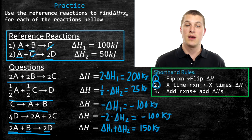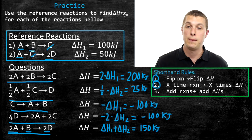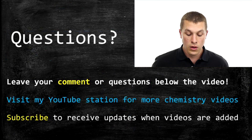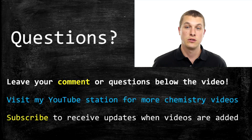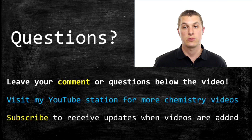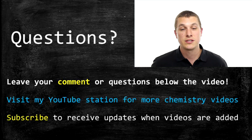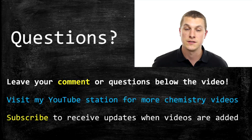That's been an introduction to the rules we can use to manipulate a chemical reaction. Go ahead and watch the next video where we'll learn how to calculate the enthalpies of reactions for a reaction we've never run before using these three rules. Thanks for watching Real Chemistry. You can ask questions below or subscribe to receive future updates.